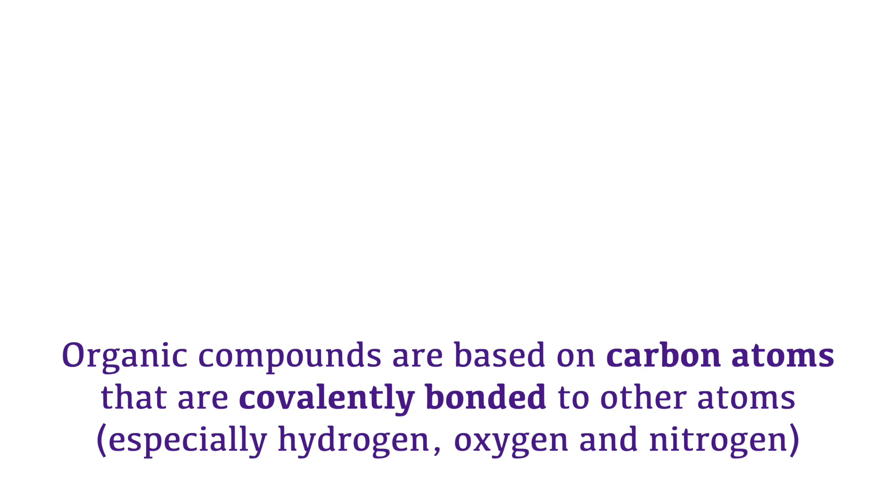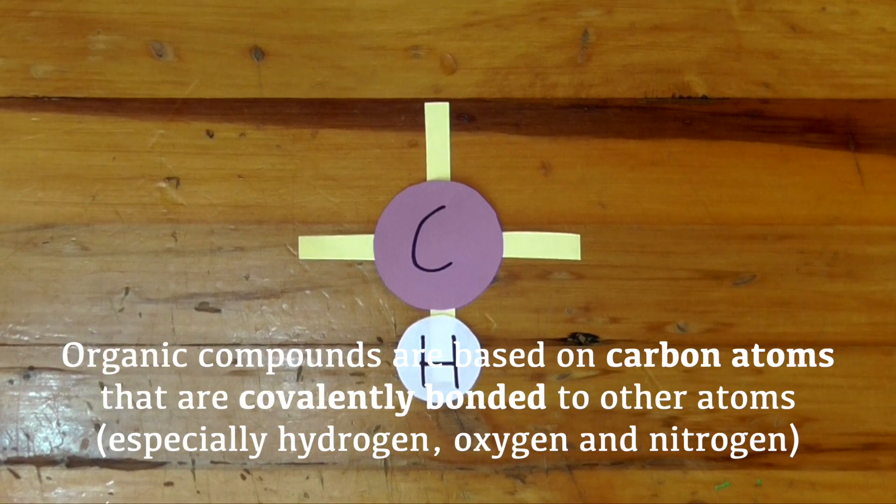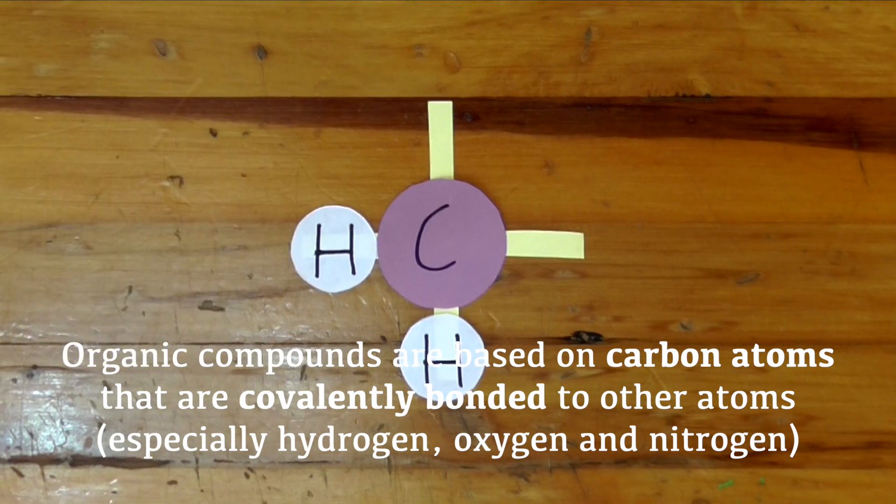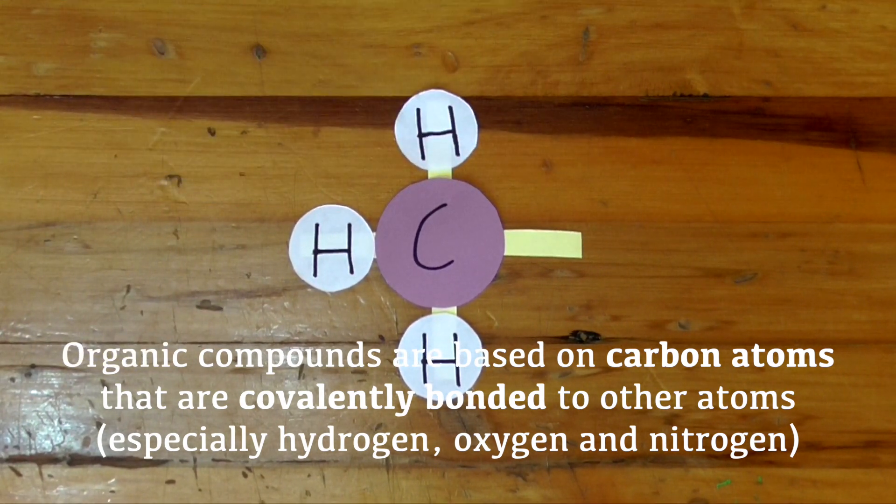The term organic means different things depending on what kind of scientist you ask. To a chemist, it refers to substances full of carbon atoms. Specifically, those carbon atoms are linked to other atoms by covalent bonds. What does this mean?